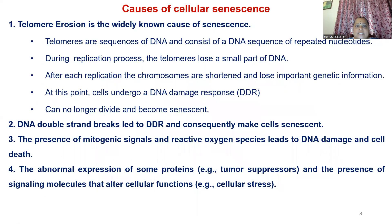The main cause of cellular senescence is telomere erosion. The telomere consists of repeated nucleotide DNA sequences, and during replication, some part of the DNA may be lost. At each replication, the chromosome is shortened and important genetic information is lost. This leads to a DNA damage response and no further cell division. DNA double strand breaks cause DNA damage, and the presence of mitogenic signals and reactive oxygen species also leads to DNA damage. Abnormal expression of proteins and signaling molecules alter cellular functions, which we call cellular stress.